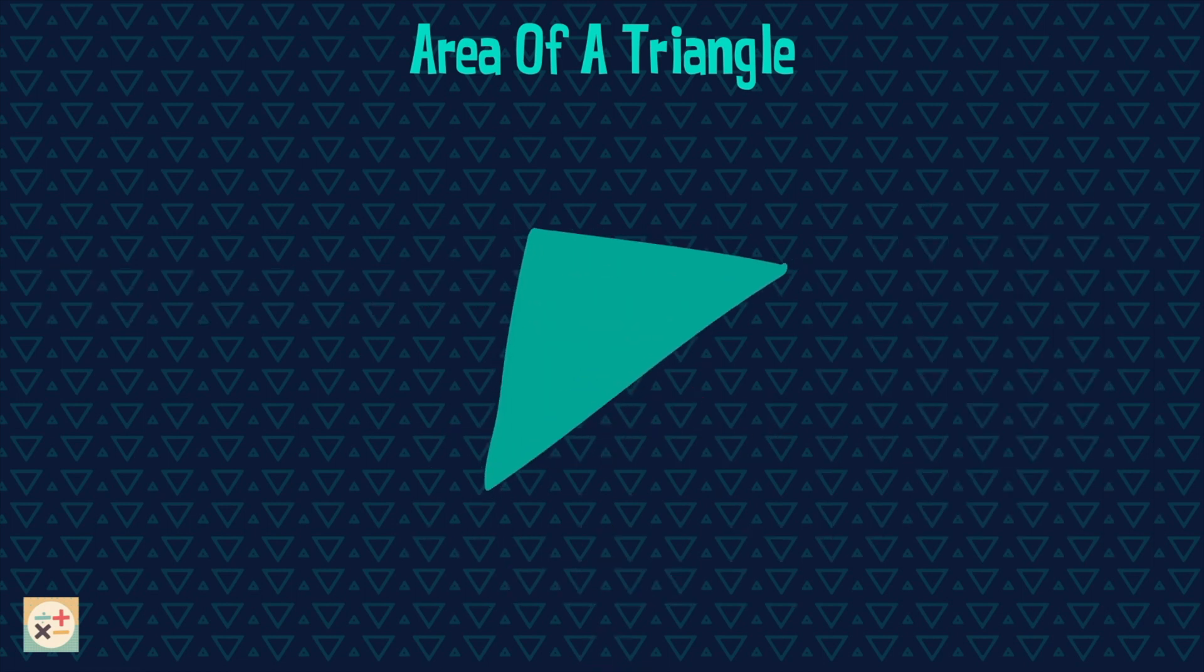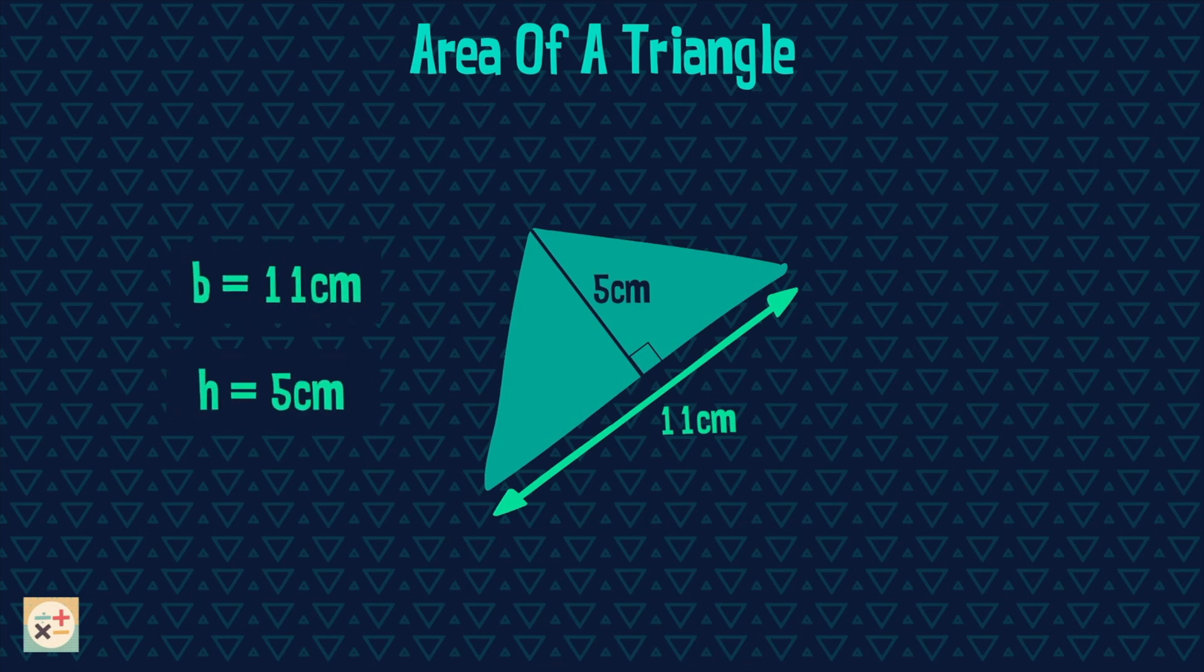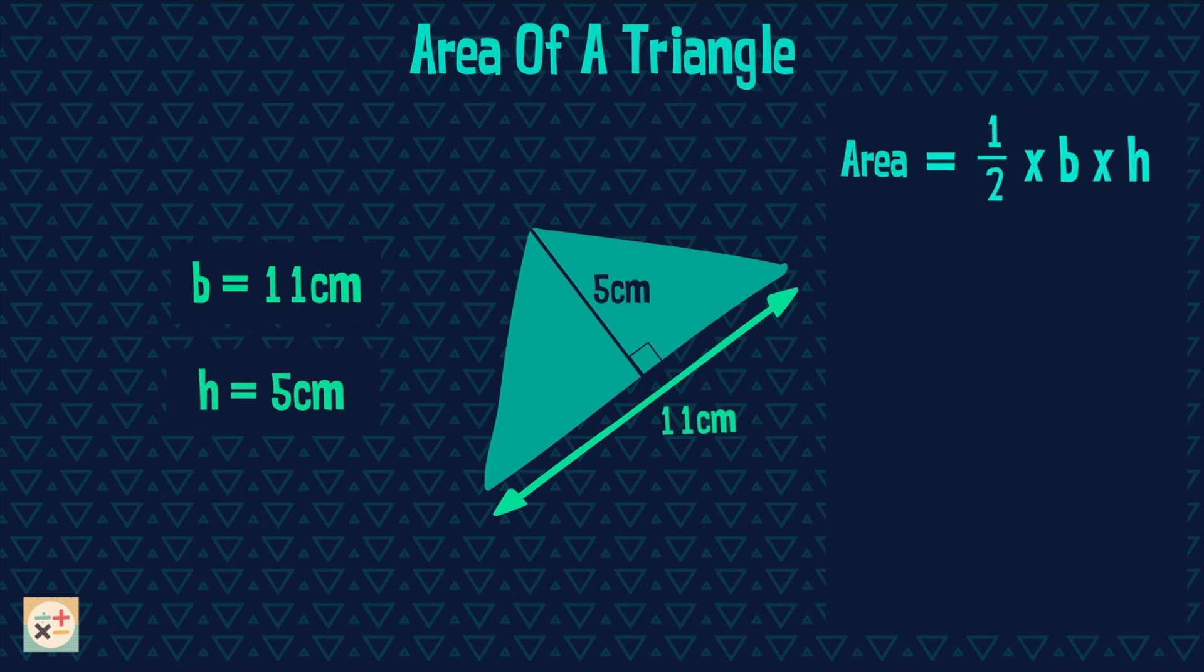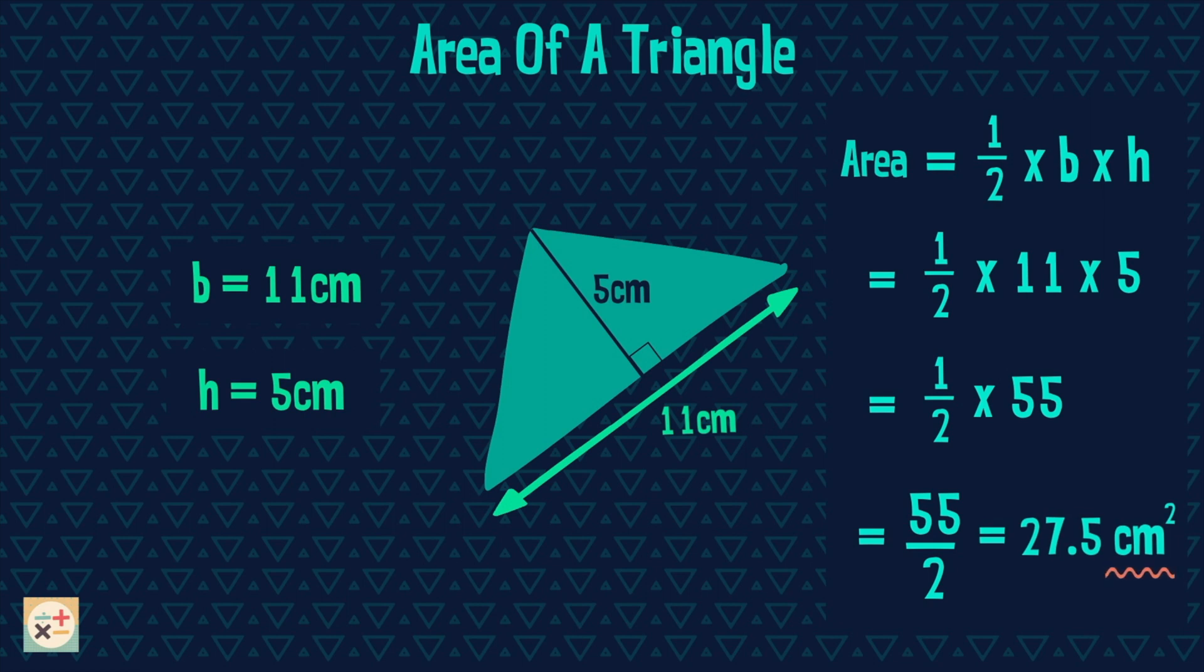Let's have a look at an example. This triangle has a base length of 11 centimeters and a height of 5 centimeters. Let's use the formula to calculate the area by substituting in the values of the measurements we have been given. Don't forget to include the squared units in your answer, in this case centimeters squared.